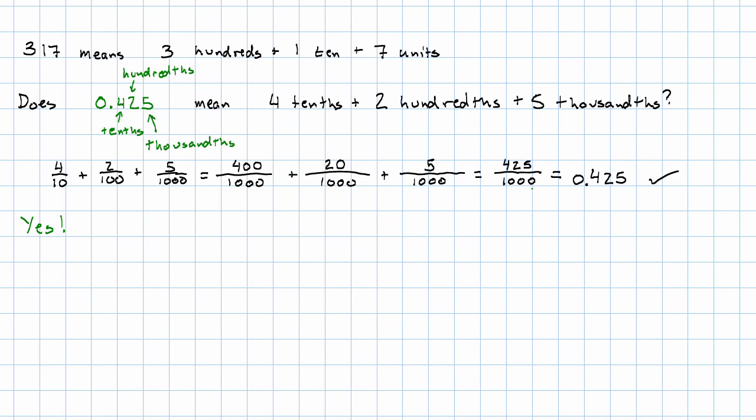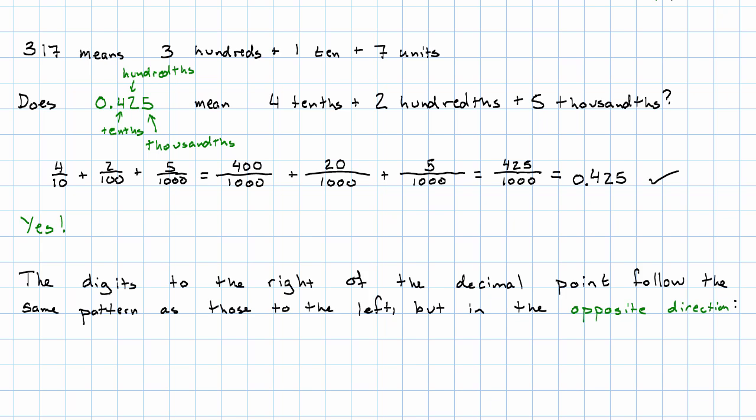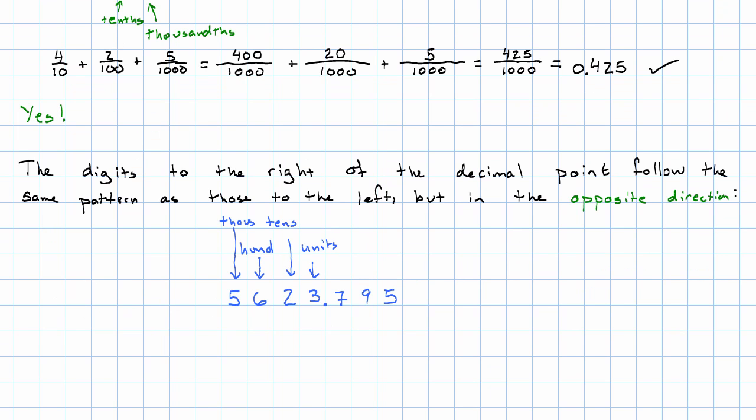And so we can regard those digits to the right of the decimal point as representing place values just in the same way we do the digits to the left of the decimal point. In fact, the digits to the right of the decimal point follow the same pattern as those to the left, but in the opposite direction. So, to the left of the decimal point we had units, tens, hundreds, thousands, and so on.